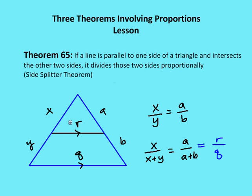Additionally, we're going to figure out that there's also a relationship between the bases, or the lines that are parallel to each other. If we think about it, if they're proportional, we really have two similar triangles. Let's call the vertices A, H, B, C, and D. We know that angle H is congruent to itself, and if the two sides are proportional, then triangle H-A-C is similar to triangle H-B-D, because we have an angle and two sides that are proportional.